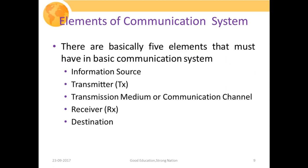There are basically five elements that a basic communication system must have. Number one is the information source, whose responsibility is to generate information. Then the transmitter, whose responsibility is to modify the information signal so it can propagate through the medium or channel. Third is the physical medium or communication channel through which information propagates. Then a receiver, whose responsibility is to re-modify the signal — inverting the operation of the transmitter. Finally, the destination where the information signal has to be delivered.